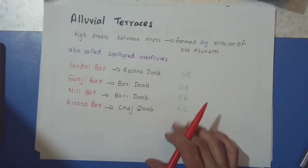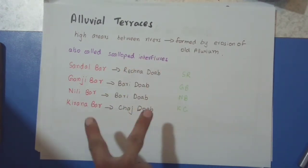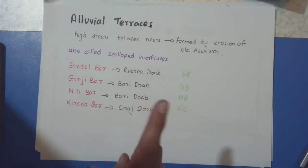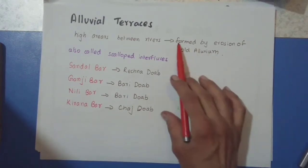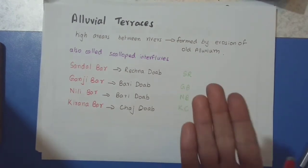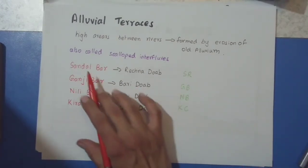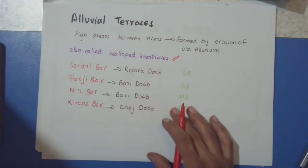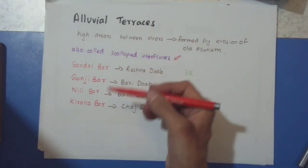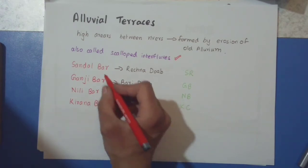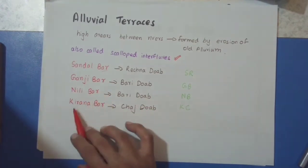Alluvial terraces are high areas between rivers — that is, within the Doab. They are formed by the erosion of old alluvium and are raised platforms with a plateau-like structure. They are also called scalloped interfluves. There are certain terraces found in Pakistan known as bars — alluvial terraces or bars. They are: Sandal Bar, Ganji Bar, Neelie Bar, and Kirana Bar.